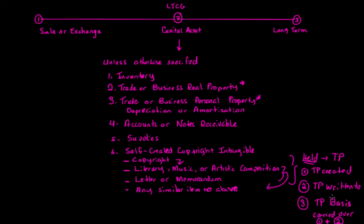For example, say the donor writes a song worth millions of dollars, and the song is gifted to the donor's son with carryover basis. The son steps into the shoes of the donor who created it, and because of that carryover basis principle, when the donee later sells the song, it will not be a capital asset — it would be ordinary income, ordinary gain.